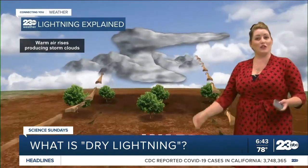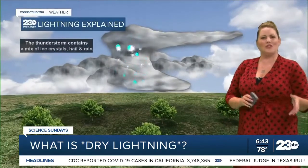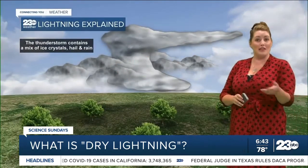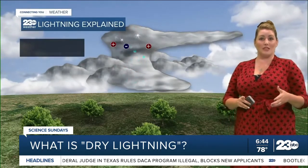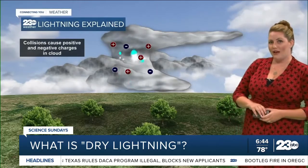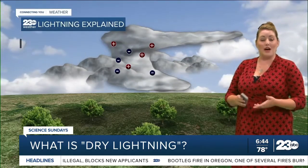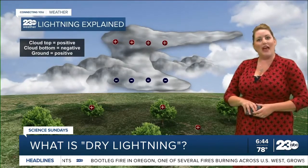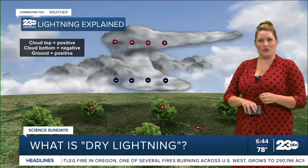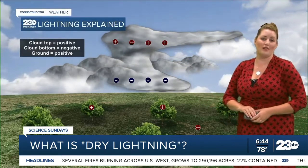A well-developed thunderstorm contains mostly small ice crystals at the top, a mixture of small ice crystals and mid levels, and a mixture of hail in the lower levels. Collisions between the precipitation in the middle of the storm cause those particles to become charged. The lighter ice crystals become positively charged and are carried upward into the storm by rising air, while the heavier hail becomes negatively charged and is either suspended by the rising air or falls toward the lower part of the storm.